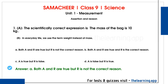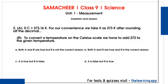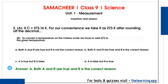Second question: Assertion — 0 degree Celsius is equal to 273.16 Kelvin; for convenience, we take it as 273 Kelvin after rounding. Reason — to convert a temperature on the Celsius scale to Kelvin, we add 273 to the given temperature. Both A and R are true, and R is the correct reason. So the correct answer is A.